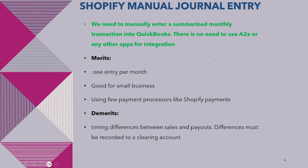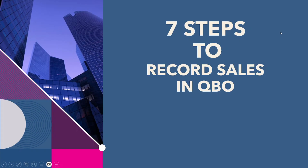The manual journal entry method requires us to manually enter and summarize monthly transactions into QuickBooks — there is no need to use A2X or other apps for integration. The merit is that only one transaction needs to be recorded per month, which is good for small businesses with few transactions and few payment processors. When a timing difference between sales and payouts occurs, we need to record them in a clearing account.